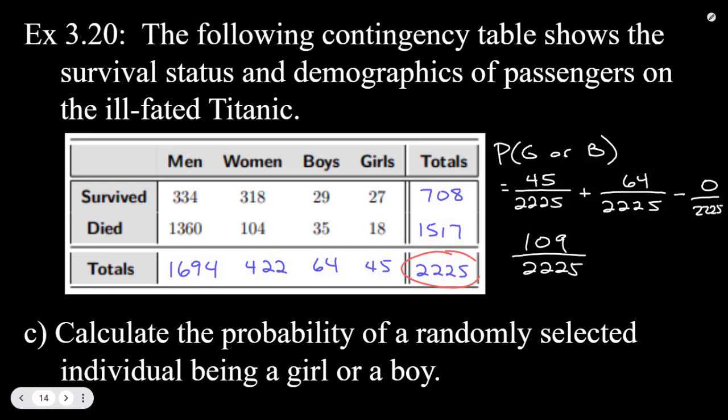And then we're going to divide that on our calculators, 109 divided by 2225, and we're going to get 0.049. So that is the probability of randomly selecting a person who was either a boy or a girl, and again, no survival status noted there.